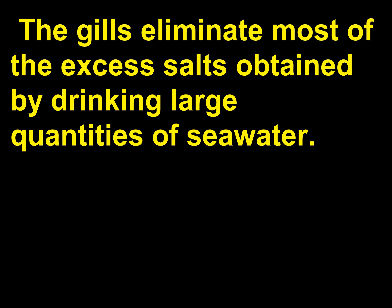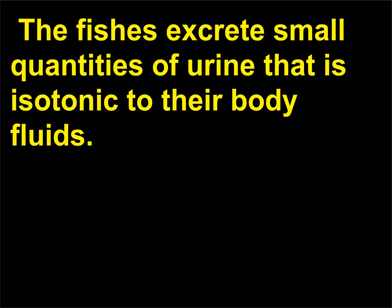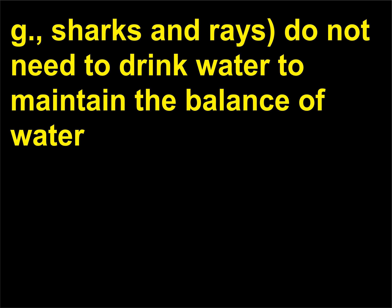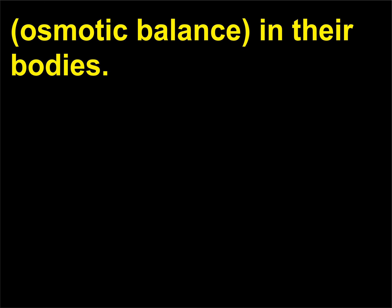The gills eliminate most of the excess salts obtained by drinking large quantities of sea water. The fishes excrete small quantities of urine that is isotonic to their body fluids. By contrast, cartilaginous fishes — e.g., sharks and rays — do not need to drink water to maintain the osmotic balance in their bodies.